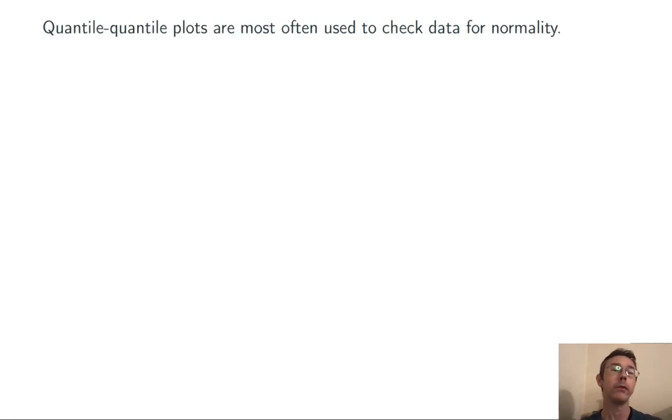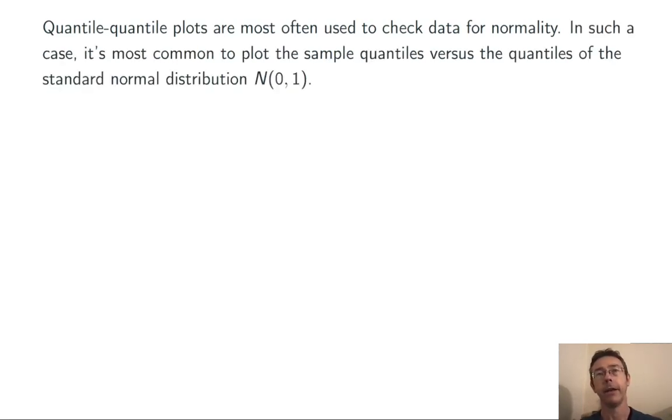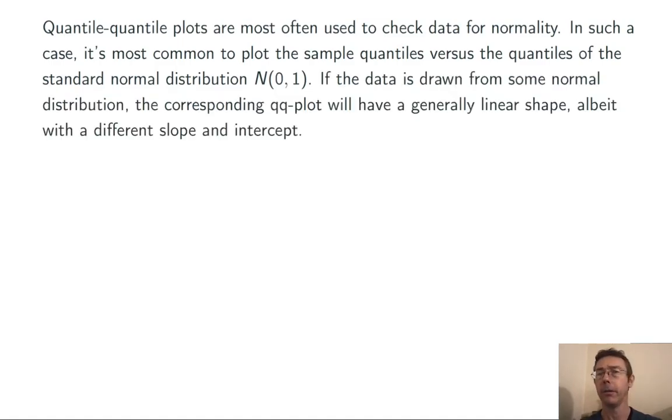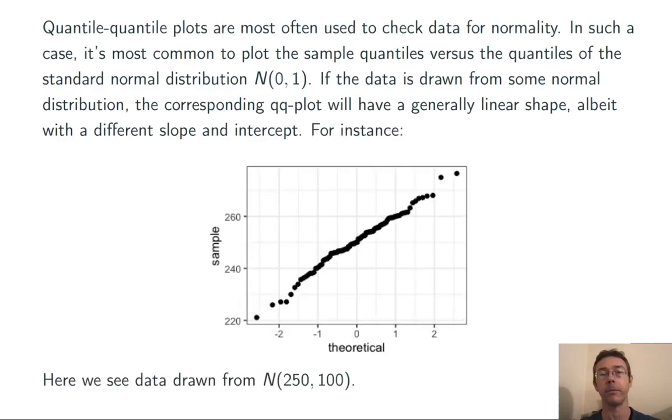QQ plots are most often used to check for normality. And in that situation, you actually don't really need to think about which normal distribution you're looking at, what the parameters are. Because if the data is drawn from any normal distribution, if you plot the theoretical quantiles for N(0,1) on the horizontal axis, you should still get a linear shape, just with a different slope and intercept. For instance, here's some data that I've just drawn at random from a normal distribution with mean of 250 and standard deviation of 10. And you can see that it has a very linear shape.